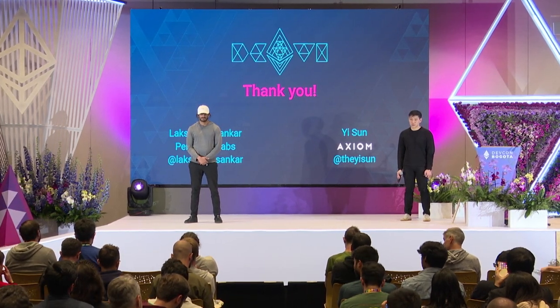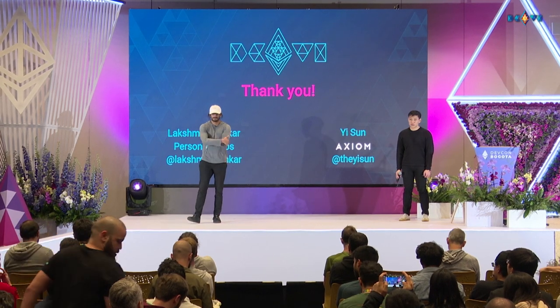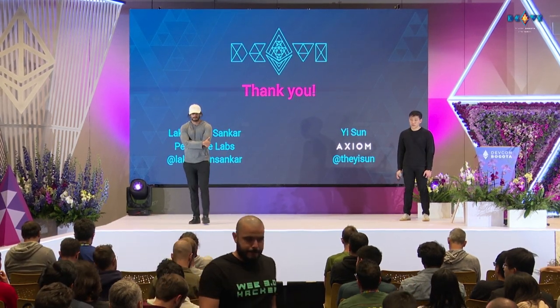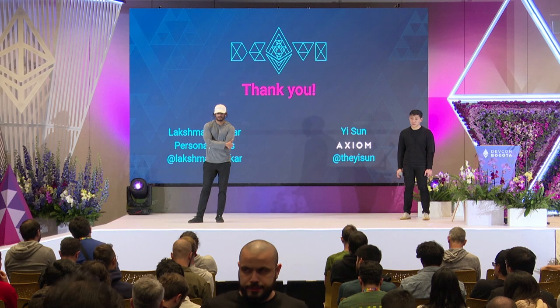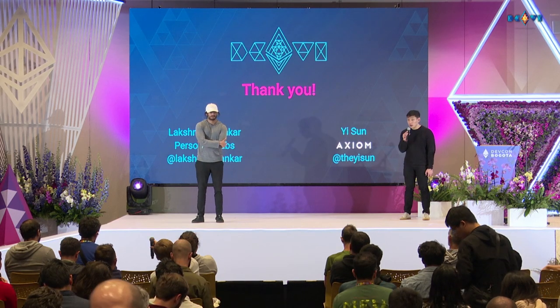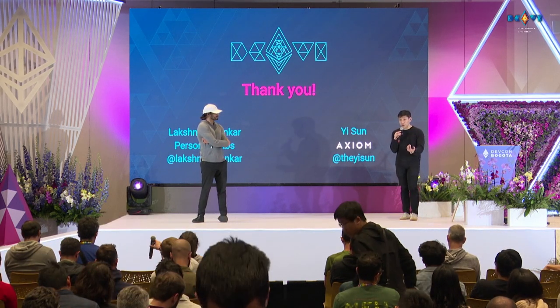Succinctness is a property of zero-knowledge proofs which says the size of the proof can be asymptotically smaller than the size of the computation you're proving. Depending on the proof system, the size of the proof could be constant or logarithmic in the size of the computation. Either way, the point is that you can verify this proof in much less compute than doing the actual computation itself.